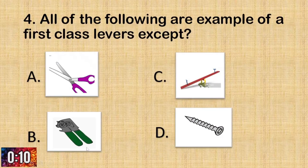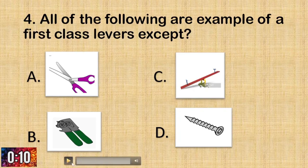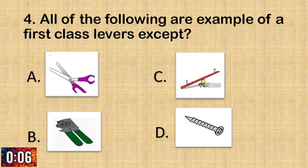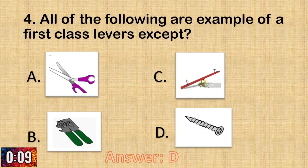Question number four. All of the following are examples of a first-class lever except... The correct answer is letter D.